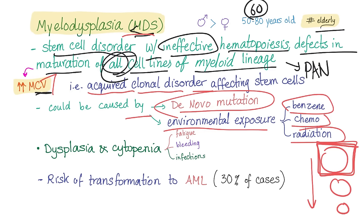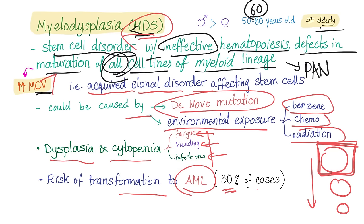Dysplasia and cytopenia are evident. By cytopenia, we mean pancytopenia. Anemia will lead to fatigue. Thrombocytopenia will lead to bleeding. And leukopenia will lead to infections. MDS has a risk of transformation to AML in 30% of cases — this makes sense because dysplasia is precancerous.